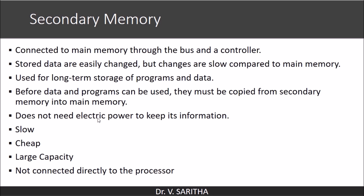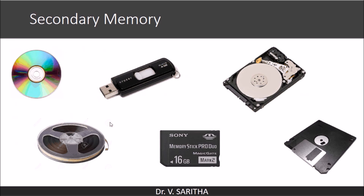For example, if you are going to play a game stored in secondary memory, it will have many programs and data. But only the part required at that instance of time will be copied into main memory — that is the key difference between secondary and main memory. Sample secondary memory devices include disk, pen drive, hard disk, floppy, memory stick, and magnetic tape.